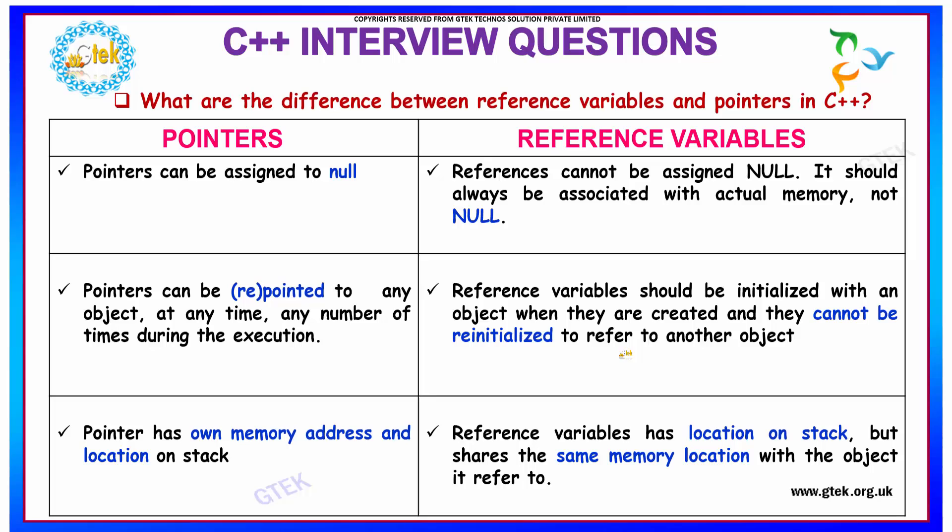Let us see our next interesting question. What is the difference between reference variable and pointers in C++? Pointers can be assigned the value of null. Reference cannot be assigned the value of null and is always associated with actual memory and not null.